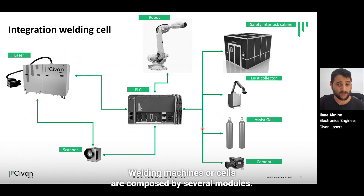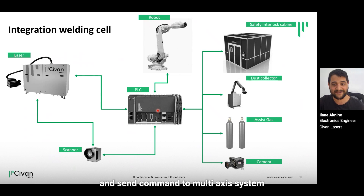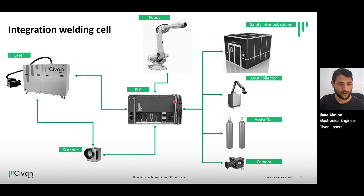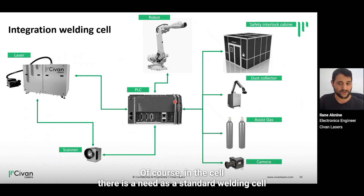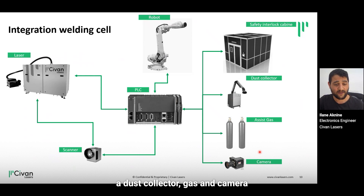A welding machine or cell is composed of several modules. The PLC is used as a master and sends commands to a multi-axis system and to the laser for real-time synchronization. In those cells, as with a standard welding cell, there is a need for an interlock cabin, a dust collector, gas, and a camera.